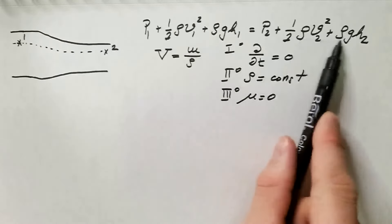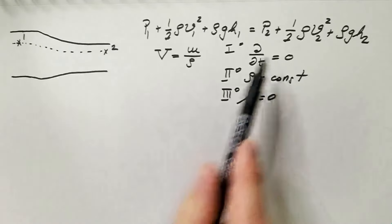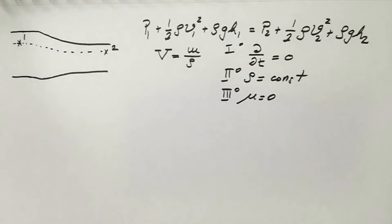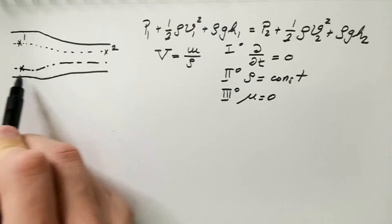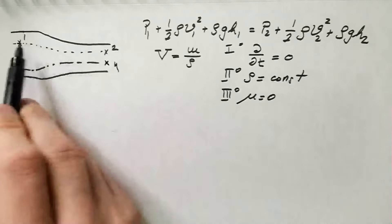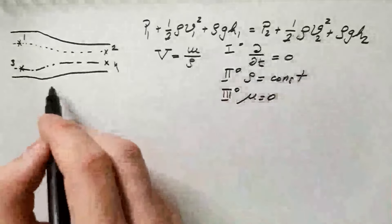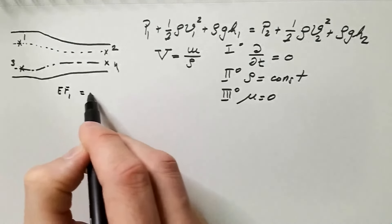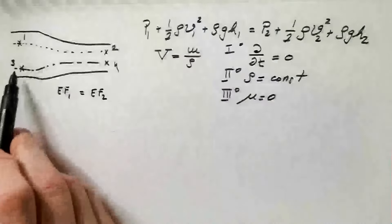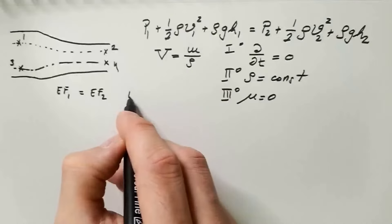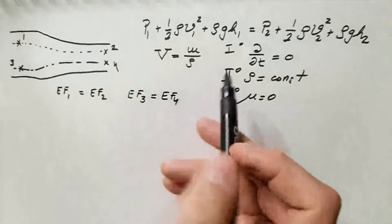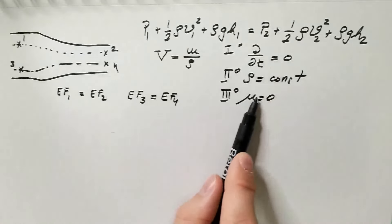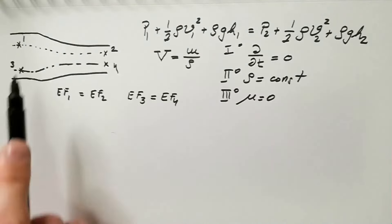If these three conditions are satisfied, I can use Bernoulli's equation. These three conditions also tell me that I can jump from streamline to streamline. For example, if I take another streamline with points three and four, Bernoulli's equation between one and two gives the same result as between three and four. Since one and three are the same under these conditions, two and four must also be the same — so I can go from three to two and from one to four with no problems.